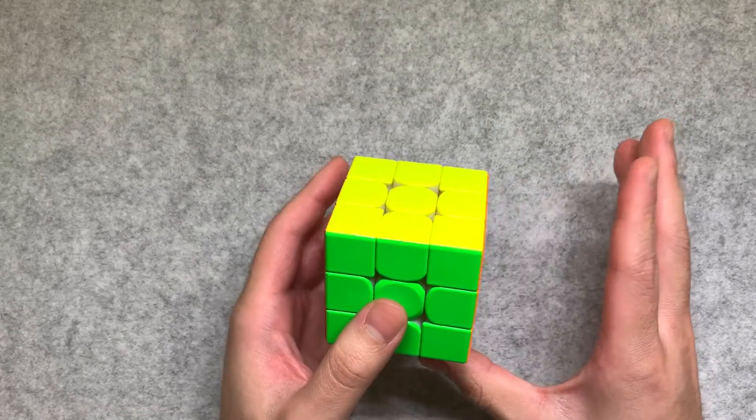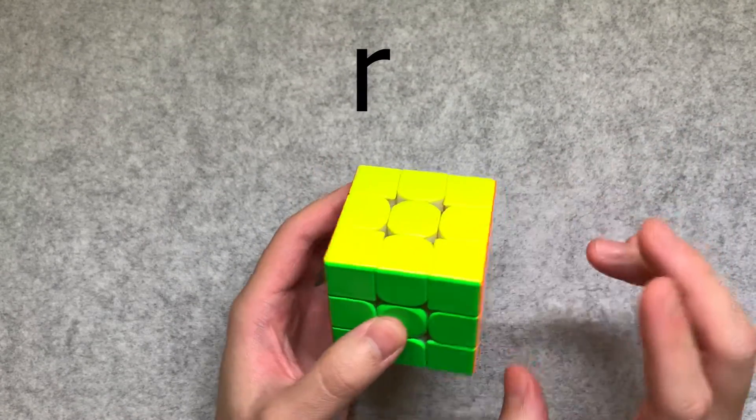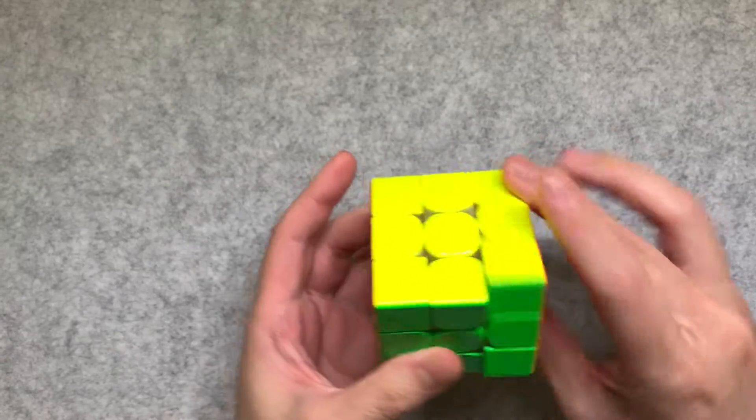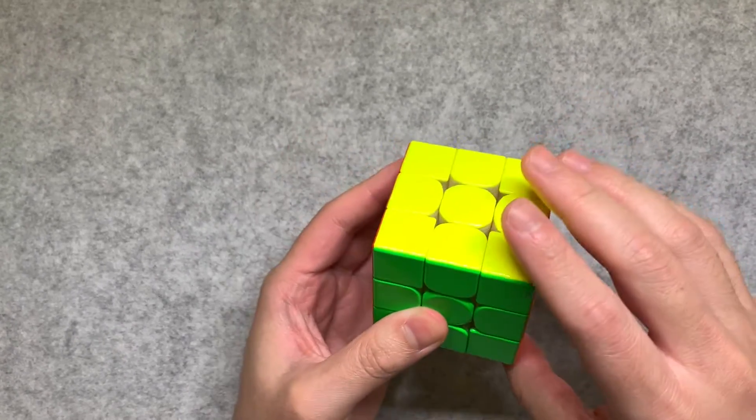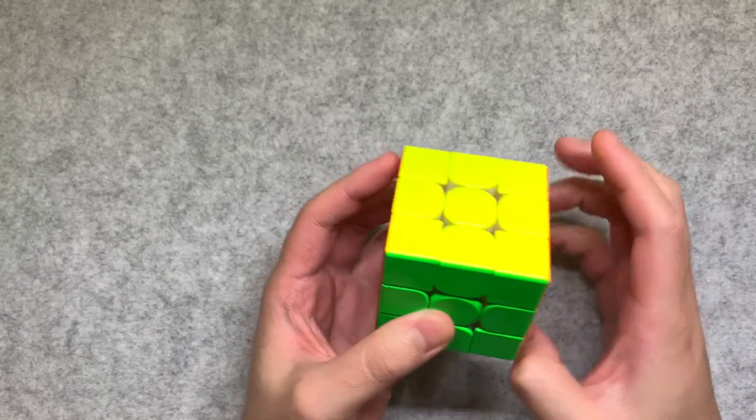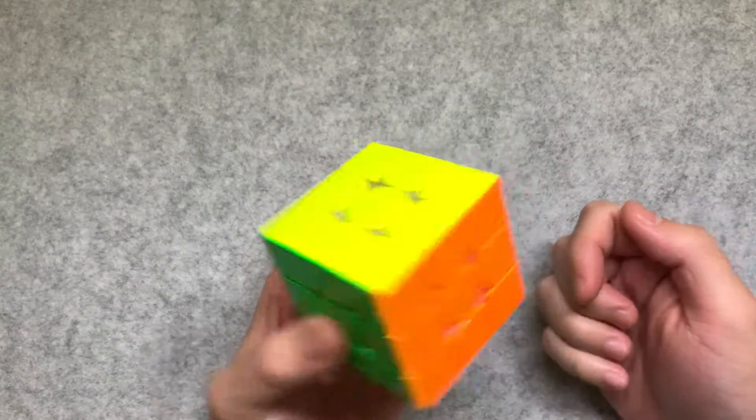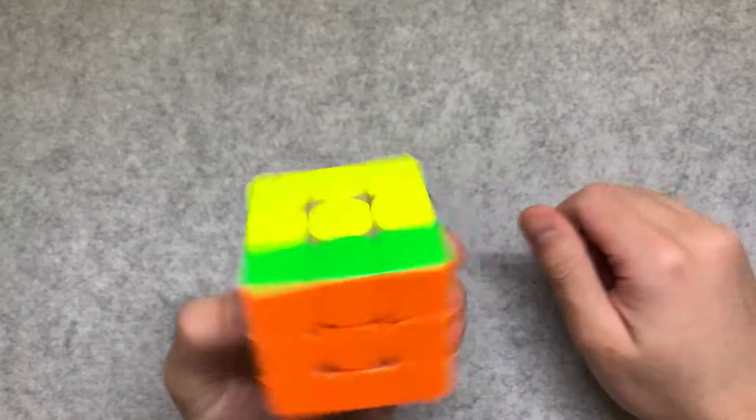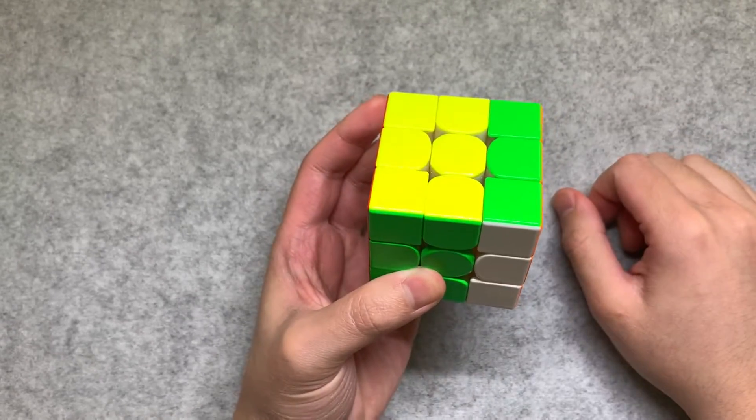Now the move in question is R. R stands for right, which is the right face, and it simply just means moving the right face clockwise. So here, green in front, the right face is orange, and clockwise is this direction. So that's the one move.